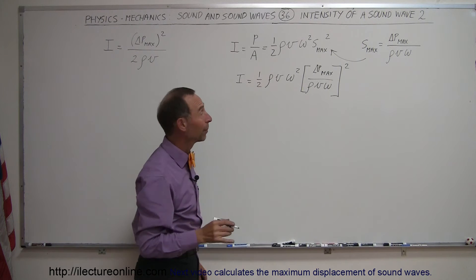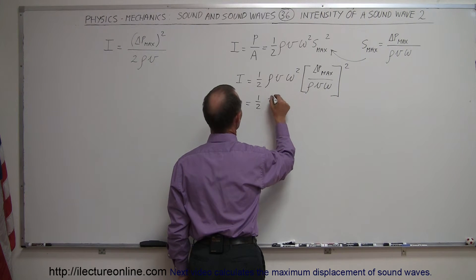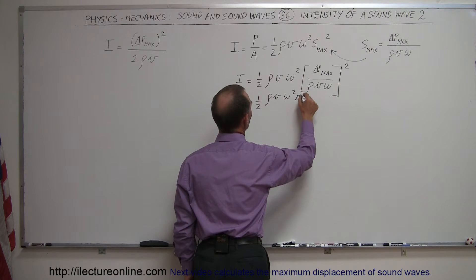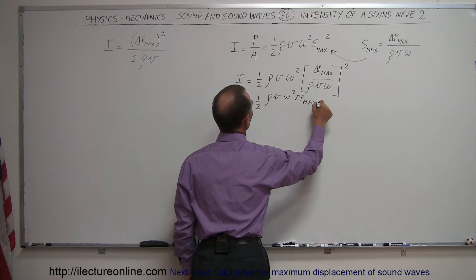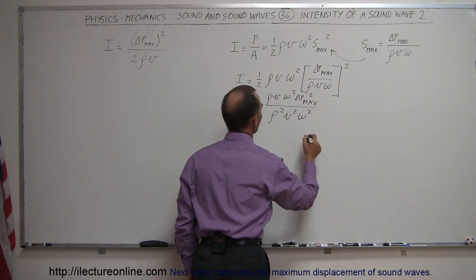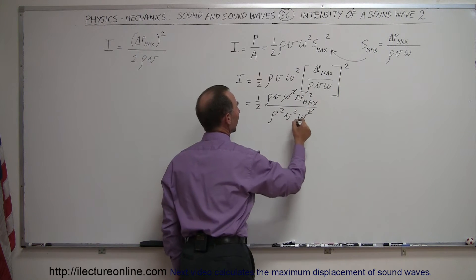If we now square the right side we get one-half times the density, velocity, omega squared times the pressure difference maximum squared all divided by the density squared, velocity squared, and omega squared, and right away you can see that the omega squared cancel out.